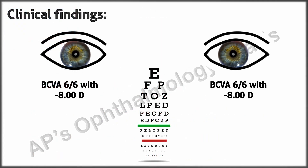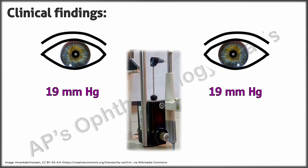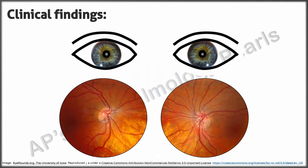On examination, her vision was 6/6 with minus 8 diopter correction in both eyes, and N6 with a plus 2 reading addition. The rest of the anterior segment was normal in both eyes. Intraocular pressures were 19 mmHg in both eyes by Goldmann applanation tonometry. This was the fundus picture.